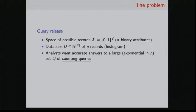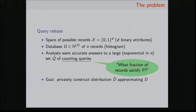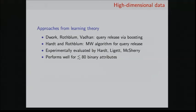So jumping to our problem, we study a very well-known problem, which is the query release problem. We suppose that we have a space of possible records called X. And for now, we'll think there are just D binary attributes. So each individual's record is a bit string of length D. Our database will be a collection of N of these records, which we represent as a histogram. And analysts want accurate answers to a large collection of queries. We're going to call this collection of queries Q. And these queries will be counting queries. So these are queries of the form, what fraction of the database satisfies some property P? Our goal will be to privately construct an approximate database D hat, which will approximate D, and then use this approximate database D hat to answer these queries.